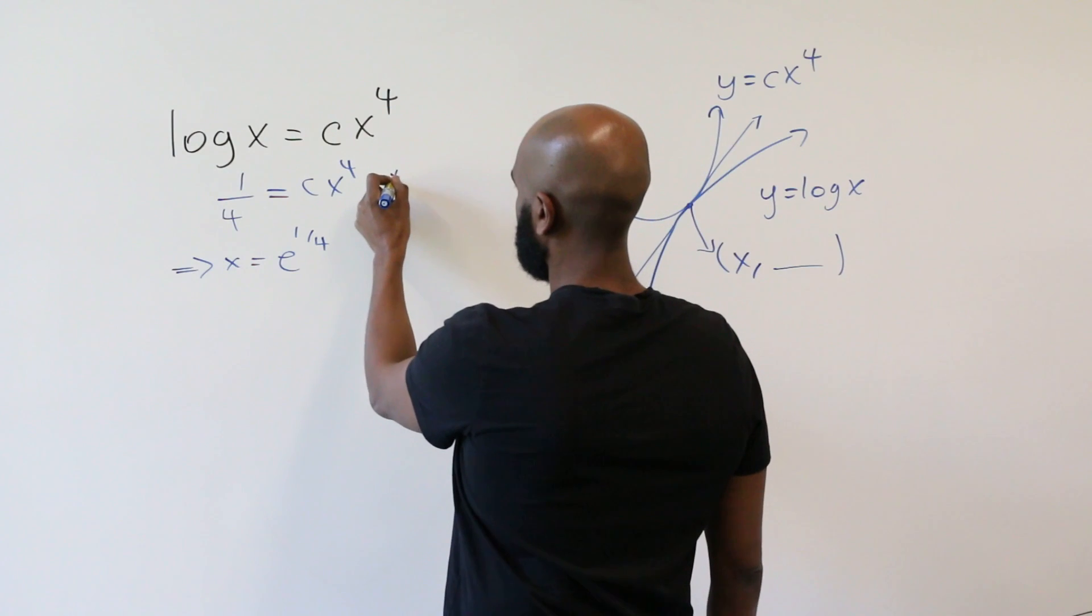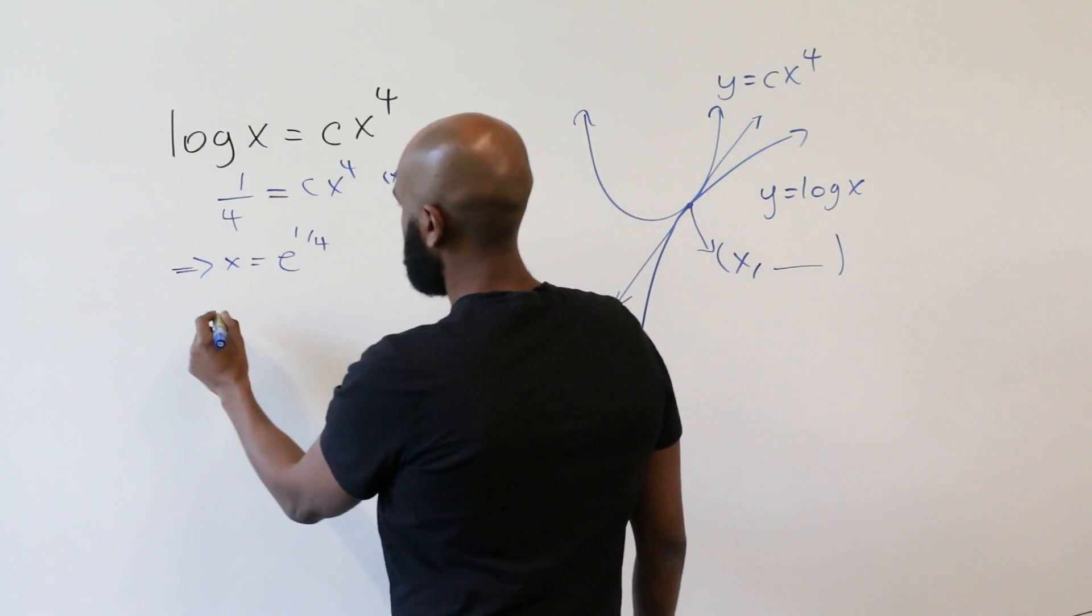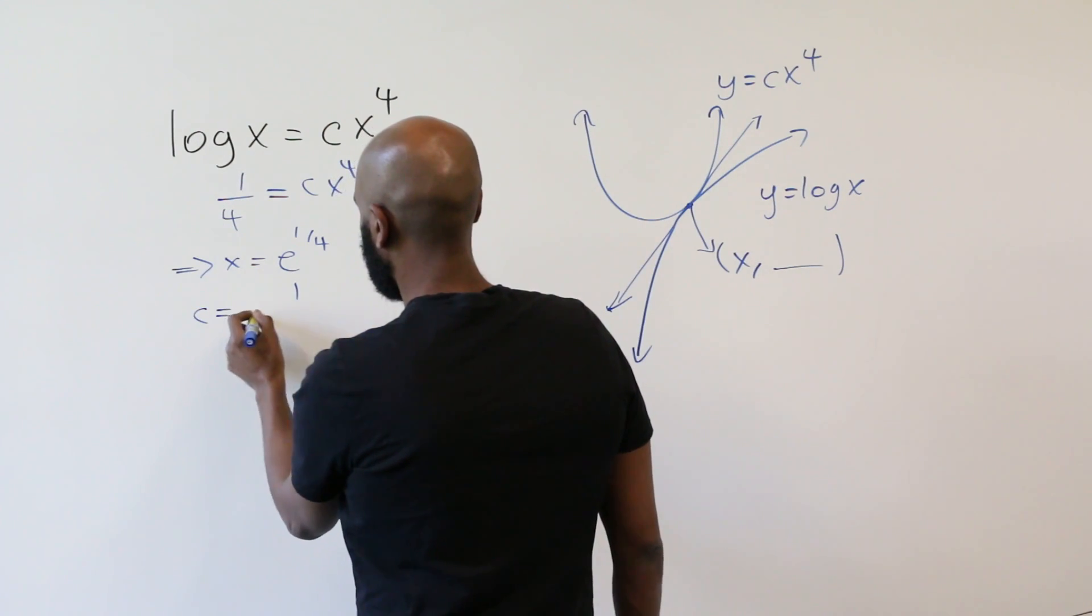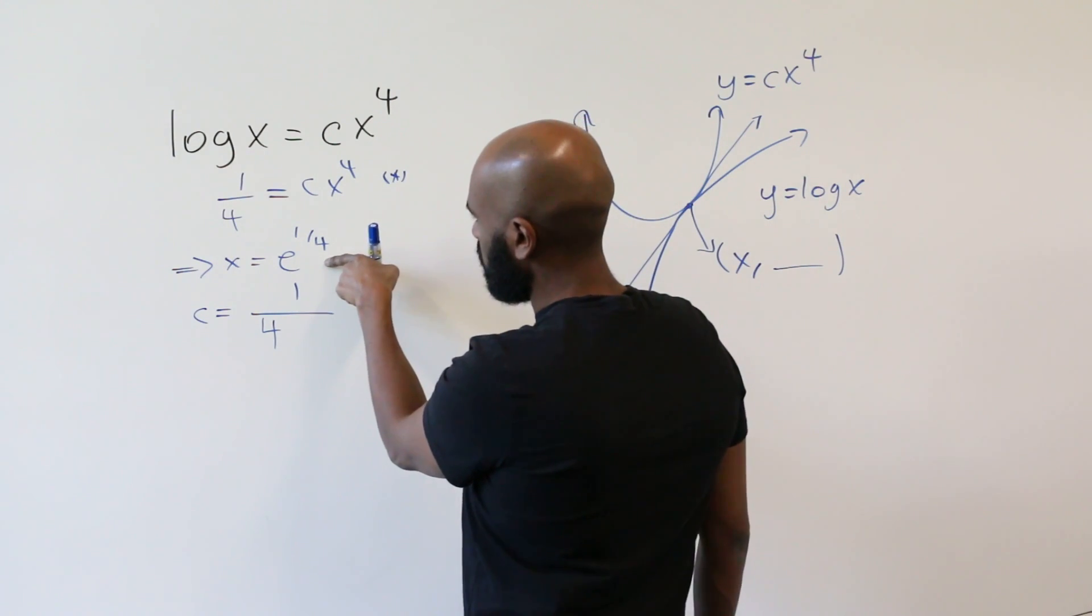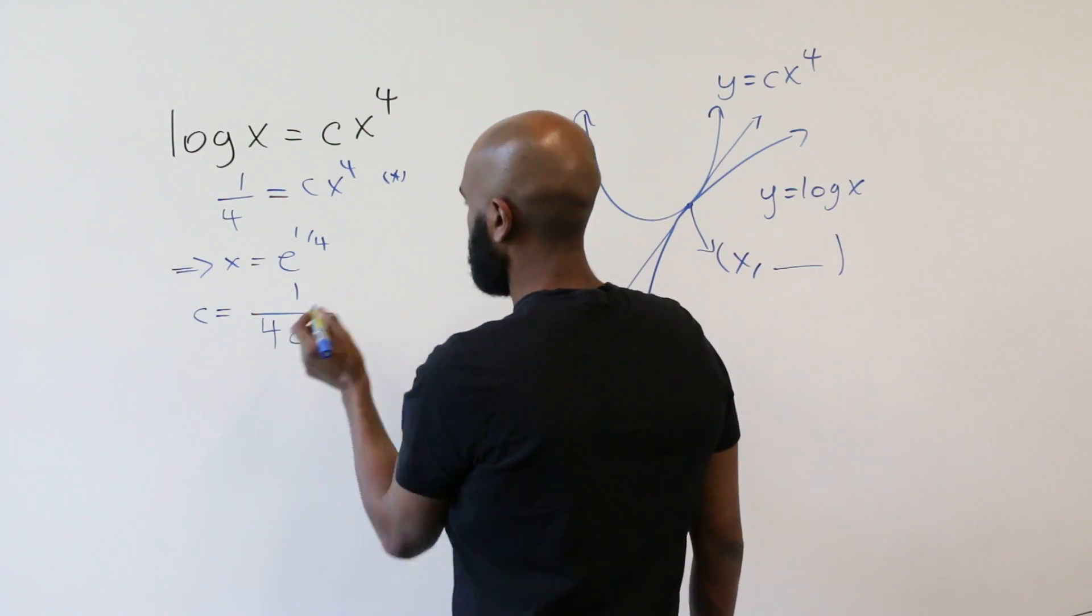This one seems a little bit simpler. So I'll use that. If we rearrange that one, we'll get that c is 1 over 4 times x to the fourth. X to the fourth here is e. So we get 1 over 4e.